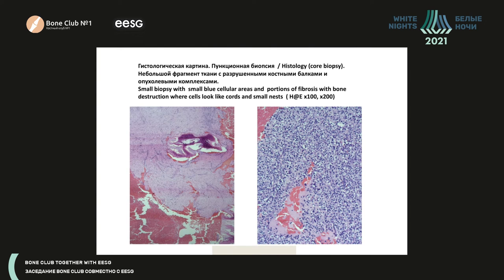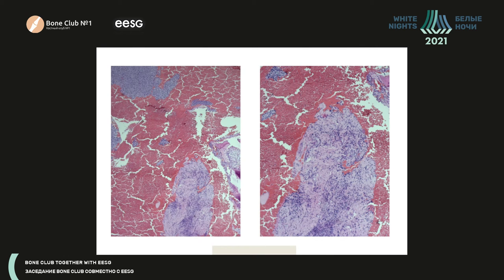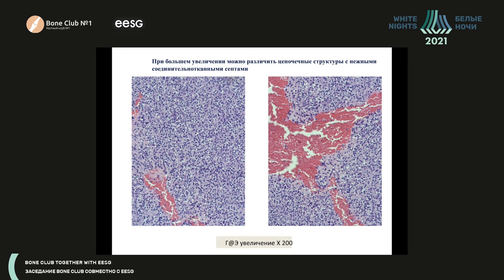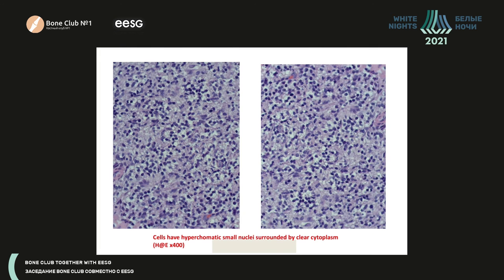Histology from a core biopsy shows destroyed pre-existing lamellar bone and fields of small cells — hyperchromatic with round nuclei — delineated by delicate soft tissue septa. At higher magnification, you see fibrosis; the tumor cells are within that fibrosis with a not-significant crush phenomenon. Looking attentively at large magnification, those chains of small cells and delicate connective tissue septa show similarities with the case presented at the New York Bone Club.